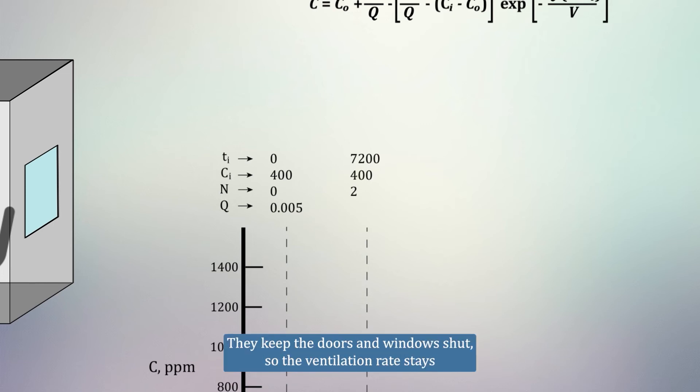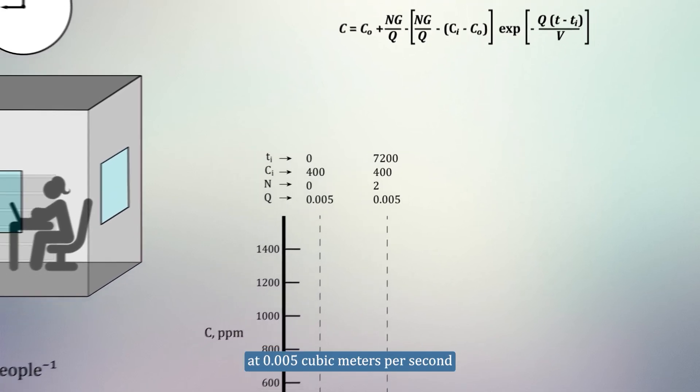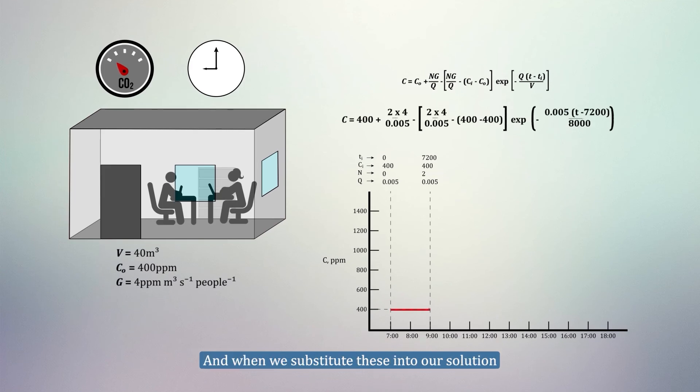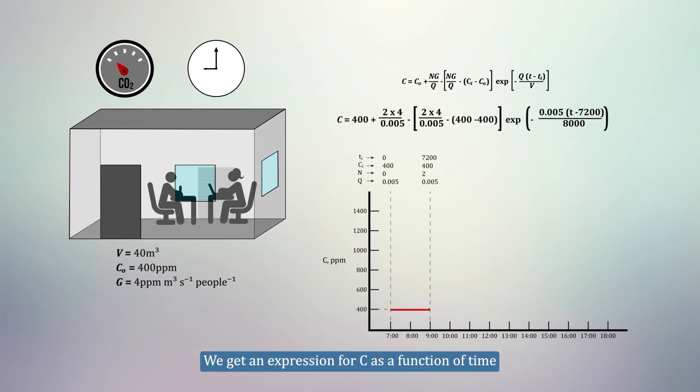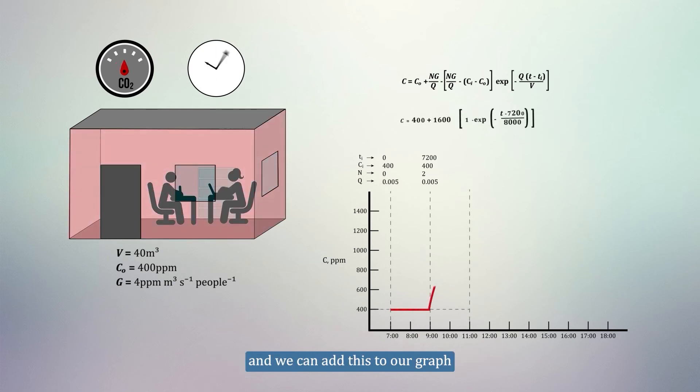They keep the doors and windows shut, so the ventilation rate stays at 0.005 m3 per second. And when we substitute this into our solution, we get an expression for C as a function of time, and we can add this to our graph.